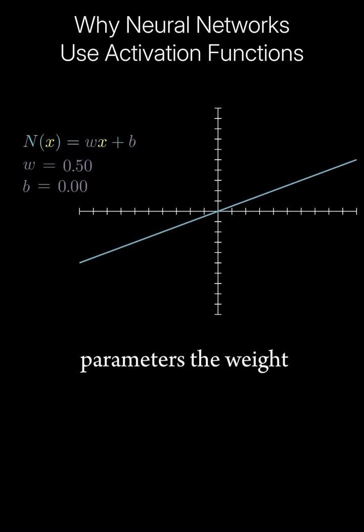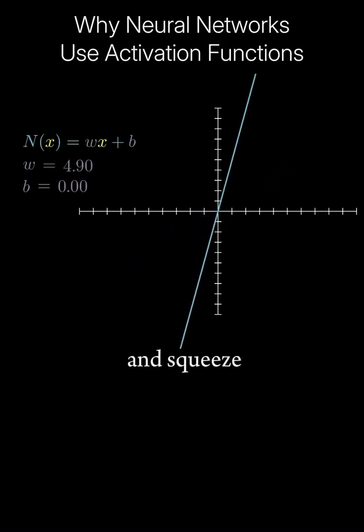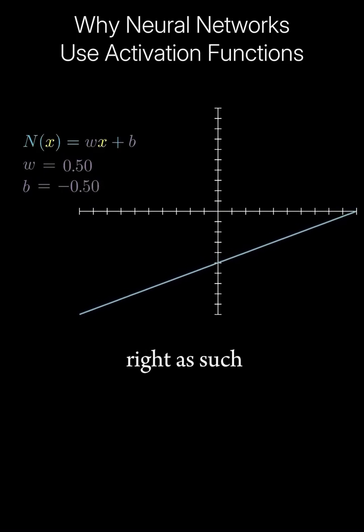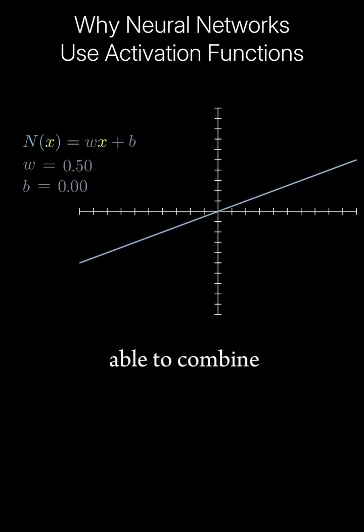With the two parameters, the weight and bias, we can stretch and squeeze and move our function up and down and left and right. As such, we should be able to combine it with other neurons to form a more complicated function.